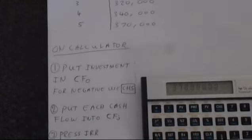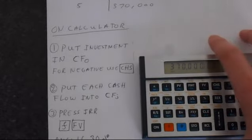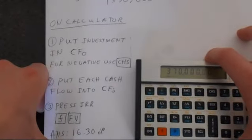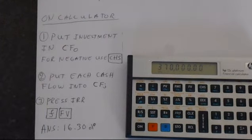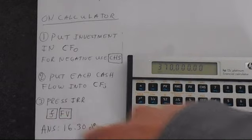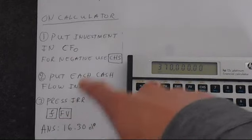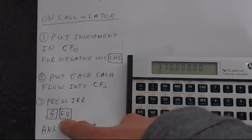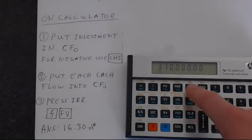So we've got all our cash flows put into the correct memories. So the final step is to actually do the calculation. And to do this, we just press function, so that's the F button, the orange one, which lets us access the orange functions. And then press FV.